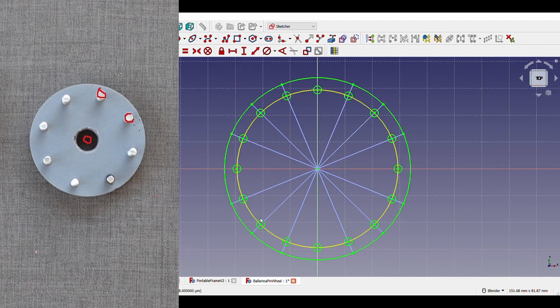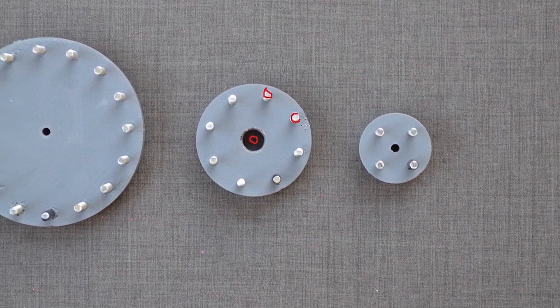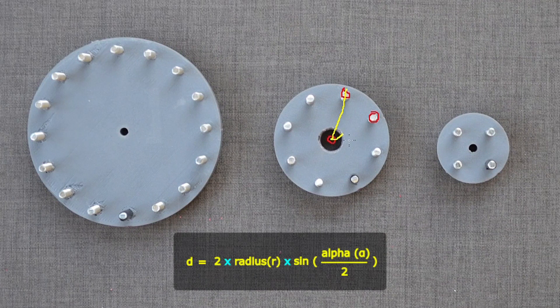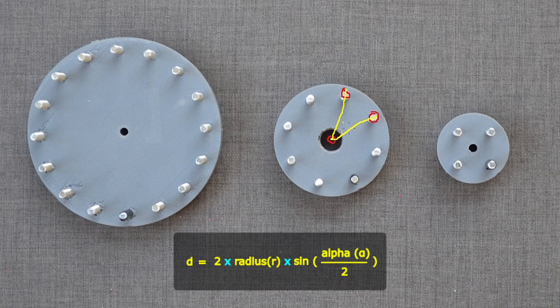Distance between pins can be calculated very easily with the help of this formula. Where alpha is the angle between two pins. This is the angle between 2 pins. This is the radius. This is the distance between pins.